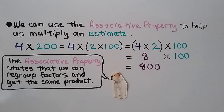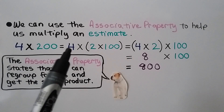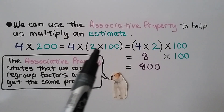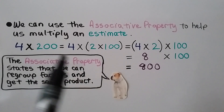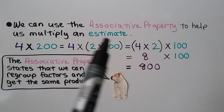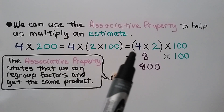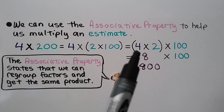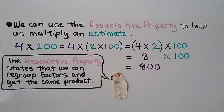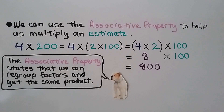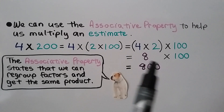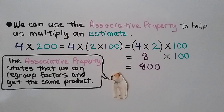We can use the associative property to help us multiply an estimate. For example, 4 times 200 equals 4 times 2 times 100. We can regroup and put parentheses around the 4 and 2, giving us 4 times 2 times 100. The associative property states we can regroup factors and get the same product. Now we have 8 times 100, which equals 800.